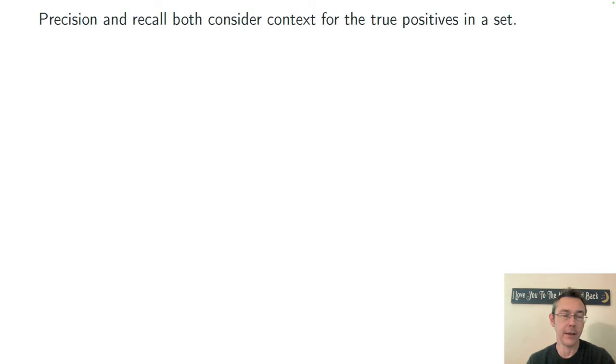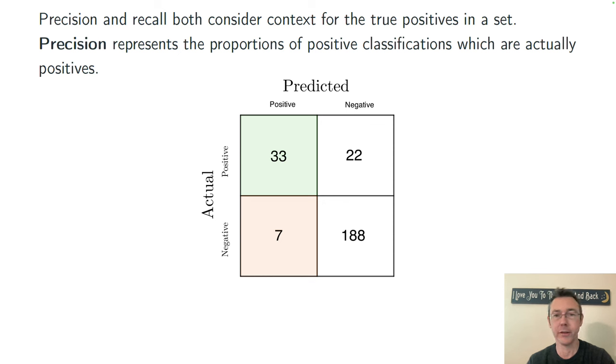Precision and recall, on the other hand, are instead looking at context for the true positives in the set. That's the upper left-hand corner in this confusion matrix. Precision represents the proportion of positive classifications that are actually positives.